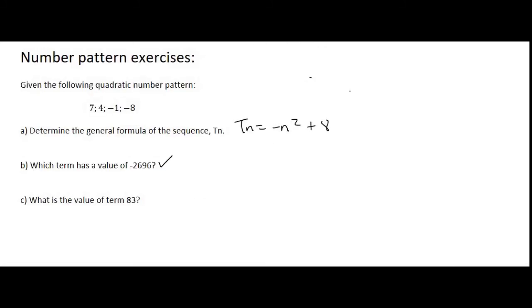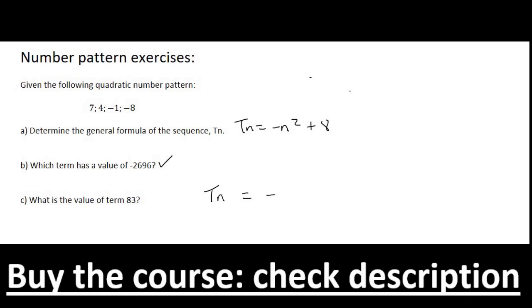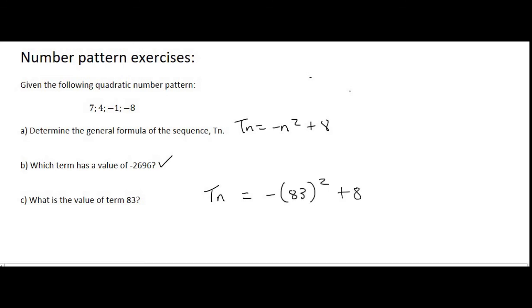And then the last question says, what is the value of term 83? And so they're asking you, at position 83, what is the value there? So when they're doing something like that, then the N value is 83. So you just substitute N as 83 in brackets.